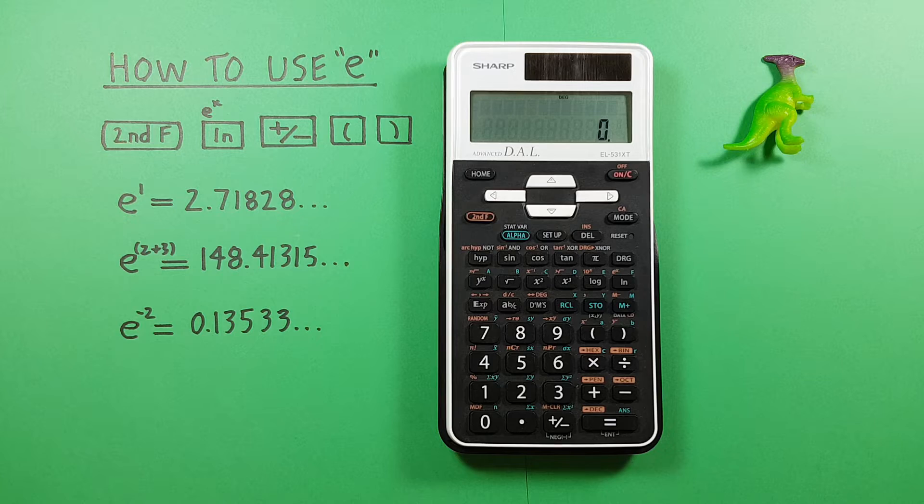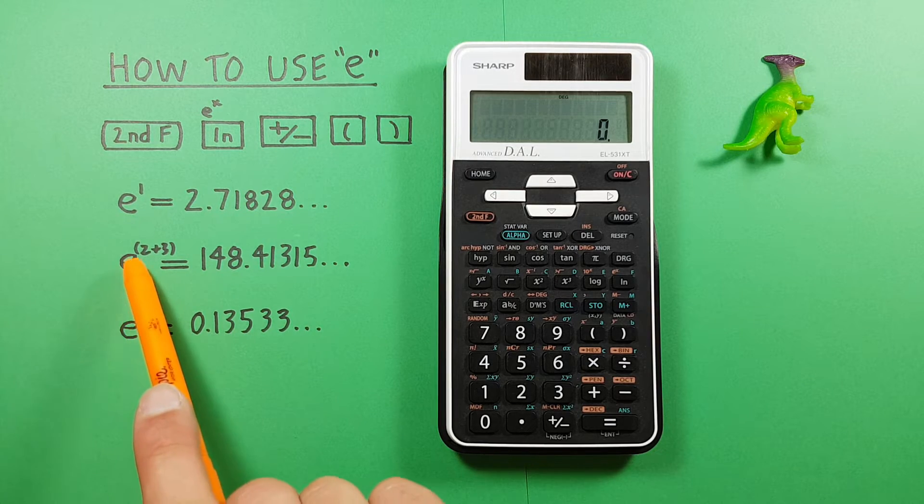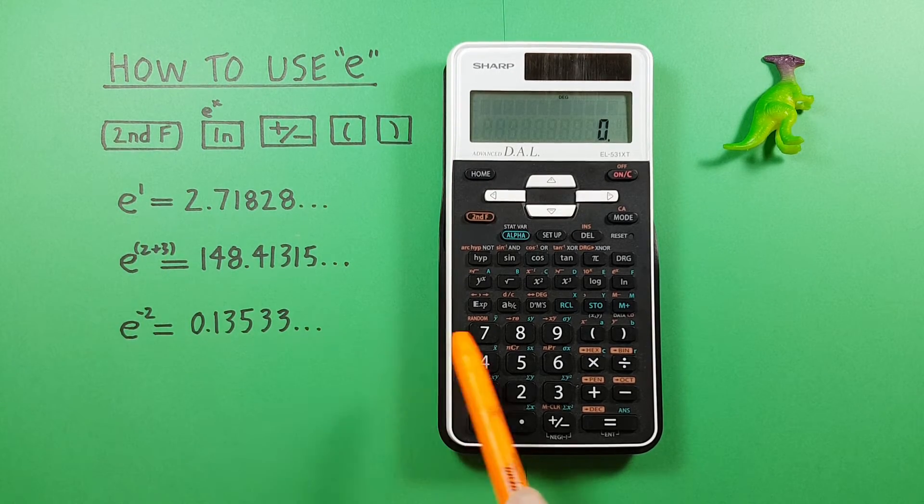If we want to do more complex exponents, like say e to the power of 2 plus 3, we need to use our brackets.